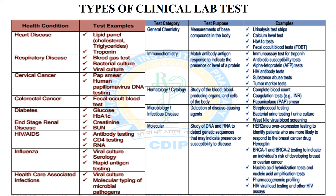The last category is molecular testing. In this category, the purpose is the study of DNA and RNA to detect genetic sequences that indicate the presence of or susceptibility to disease. Examples include BRCA1 and BRCA2 testing to indicate an individual's risk of developing breast or ovarian cancer, nucleic acid hybridization tests, nucleic acid amplification tests, pharmacogenomic profiling, and HIV viral load testing. These are all the categories and conditions for the types of clinical laboratory tests.